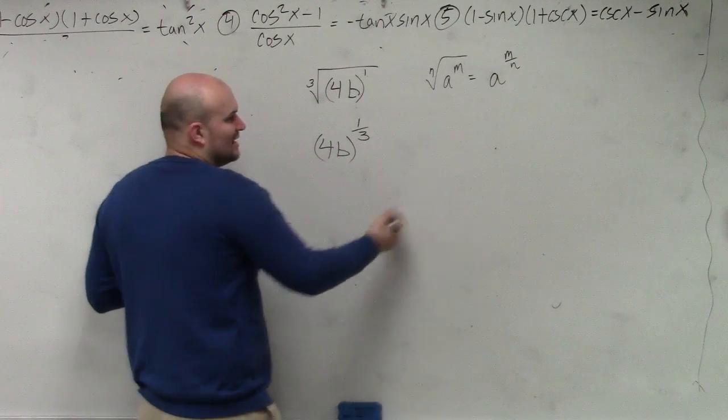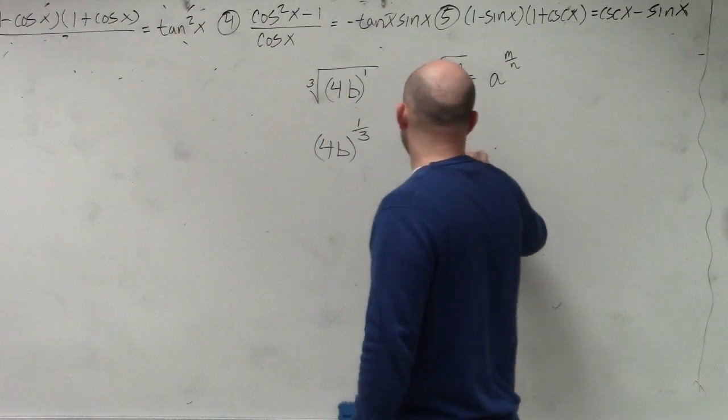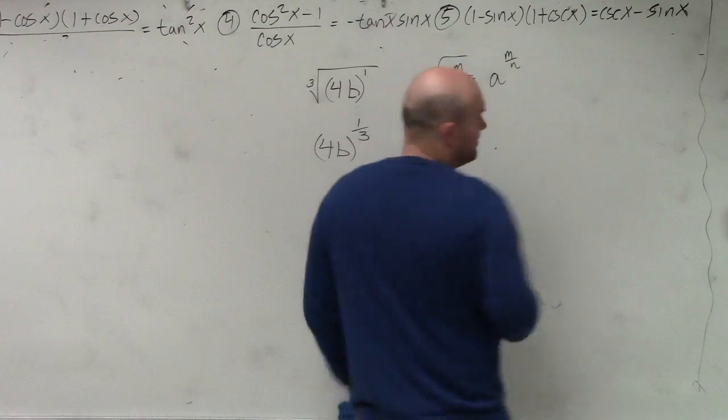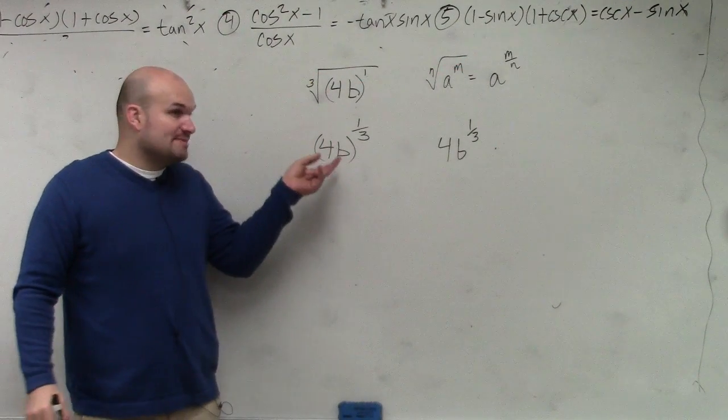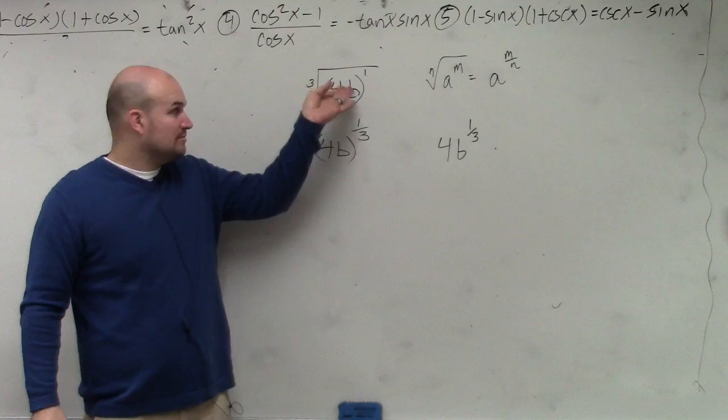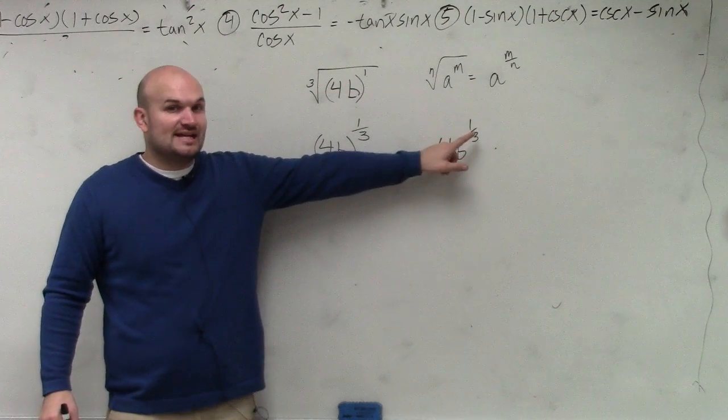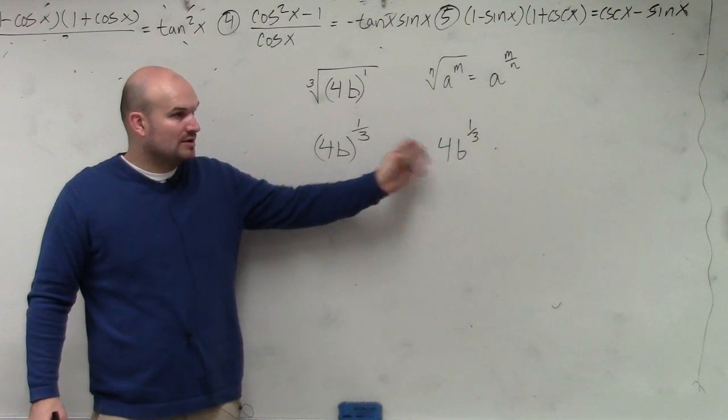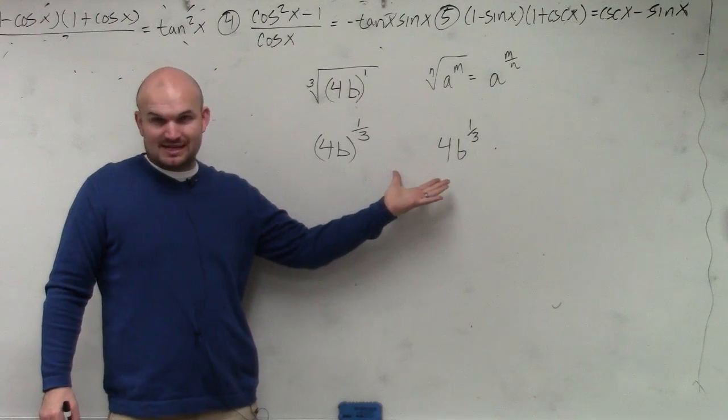The reason being, guys, is there's a big difference than 4 times b to the 1 3rd. This means 4 times b raised to the 1 3rd power. This is b raised to the 1 3rd power times 4. Do you guys see the difference how these are not the same?